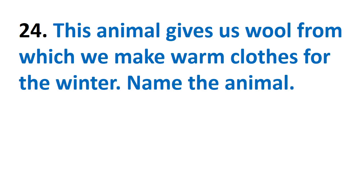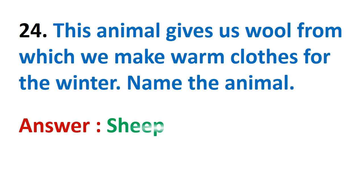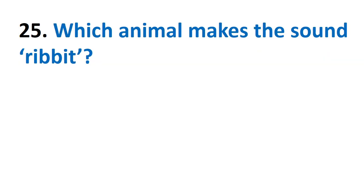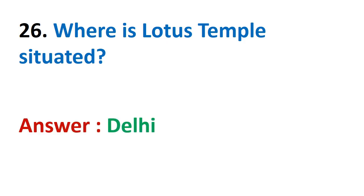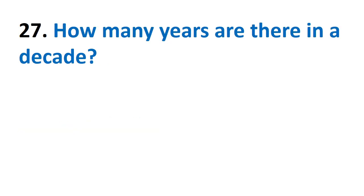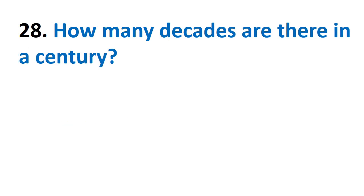This animal gives us wool from which we make warm clothes for winter. Name the animal. Sheep. Which animal makes the sound ribbit? Frog. Where is the Lotus Temple situated? Delhi. How many years are there in a decade? Ten.